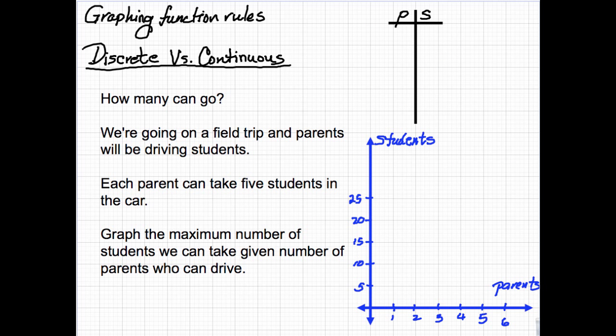Now we're going to learn the difference between discrete and continuous functions. Let's consider this first problem. How many can go? We're going on a field trip, and we need parents to drive students, and each parent can take five students in the car. So what we want to do is graph the maximum number of students that we can take, given the number of parents who drive.